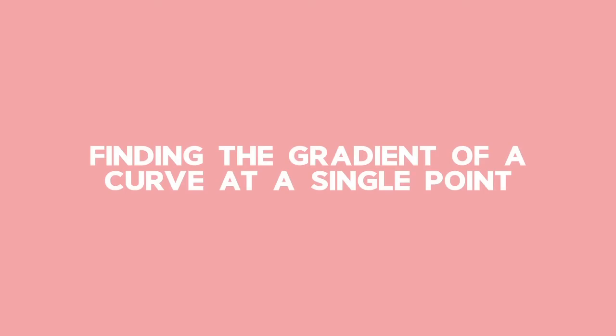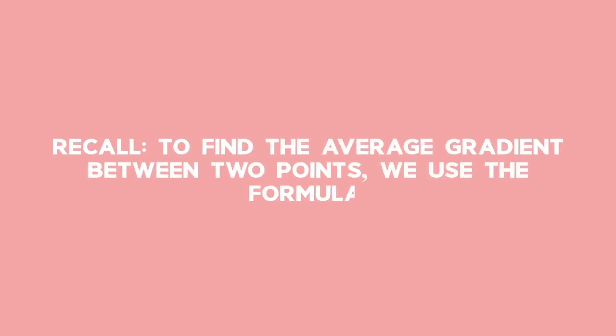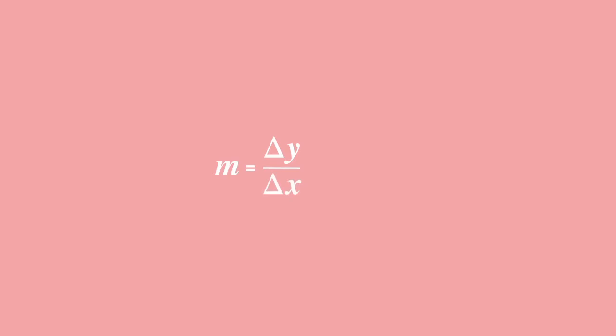Finding the gradient of a curve at a single point. Recall, to find the average gradient between two points, we use the formula: m equals the change in y values, delta y, divided by the change in x values, delta x, which equals y2 minus y1 all over x2 minus x1.